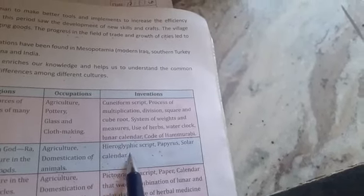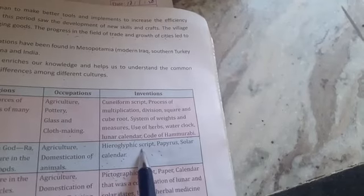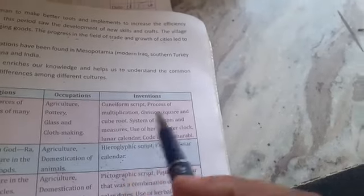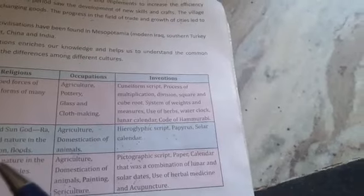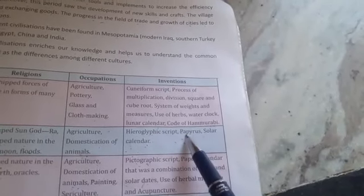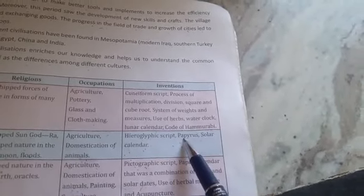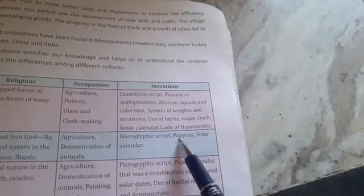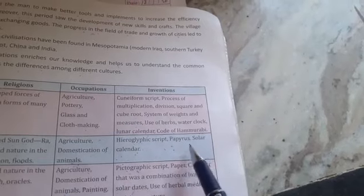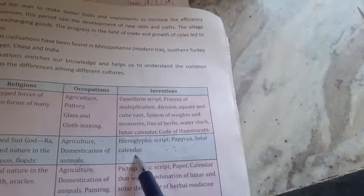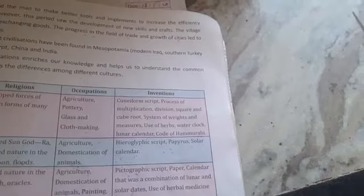In Egyptian civilization, the writing script was Hieroglyphic. They also invented papyrus — a plant from which paper was made. Additionally, the solar calendar, based on the movement and cycle of the sun, was also developed in Egyptian civilization.